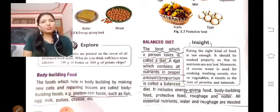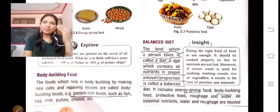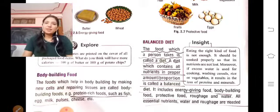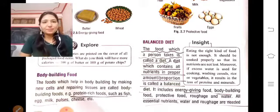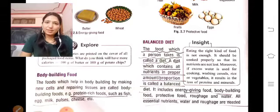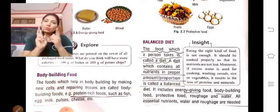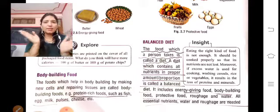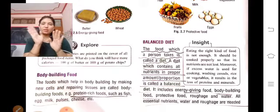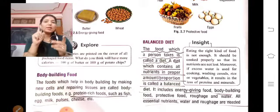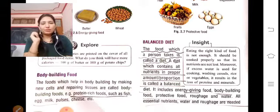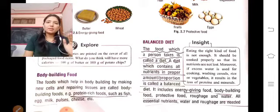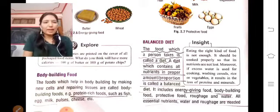Children need to eat protein-rich foods so the body has good health and growth. We need to include all three types of food in our daily diet. A balanced diet is one that contains all three types of food: body-building food, protective food, and energy-giving food, all present in daily meals.